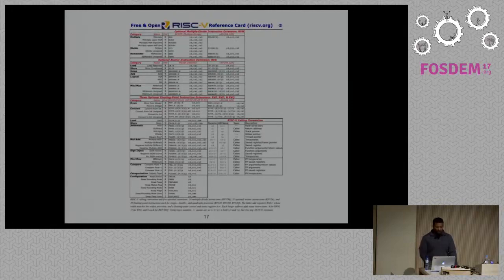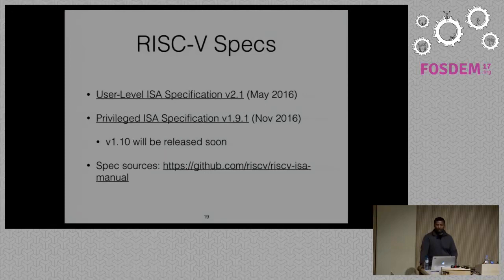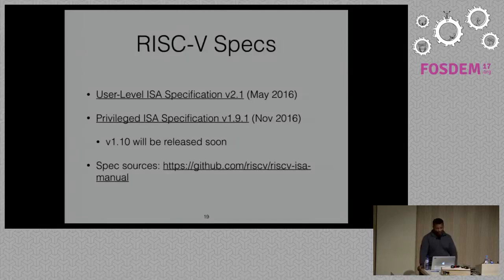The rest of the sheet shows the optional compressed extension for better code density, and the back has the other standard extensions — multiply, atomics, and floating point — plus room for the RISC-V calling conventions. It's a pretty lean ISA. You can check out the user-level ISA specification version 2.1 for instruction details like what branches and loads/stores look like. The privileged ISA specification is at version 1.9.1 — this is the interface the OS and firmware uses. Version 1.10 will be released soon. You can also find the LaTeX sources for these specifications on GitHub.